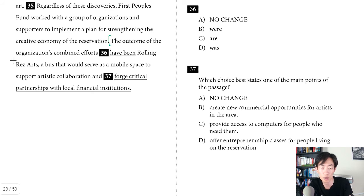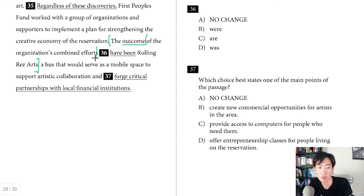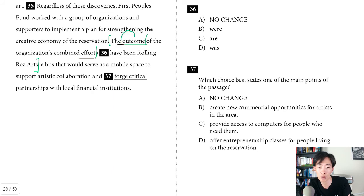Question thirty-six. Reading: 'The outcome of the organization's combined efforts have been Rolling Rez Arts, a bus that would serve as...' The question is what verb form to use. The subject is 'outcome,' not 'efforts.' Don't be confused by the prepositional phrase 'of the organization's combined efforts' — 'efforts' is the object of the preposition 'of,' placed between subject and verb to trick you. Since 'outcome' is singular, 'have' is wrong. 'Were' is plural, 'are' is plural — the only singular option is D: 'was.' Be careful to locate the actual subject and avoid anything inside prepositional phrases. Answer is D.